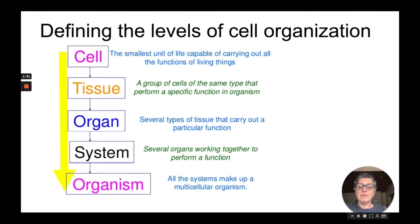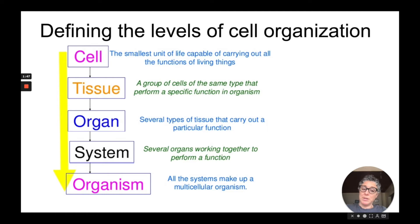When you have several organ systems, you then have a multicellular organism. So we go from cell to organism, where each previous level consists of groups of the same or different types, becoming more and more complex as you move from cell to organism.